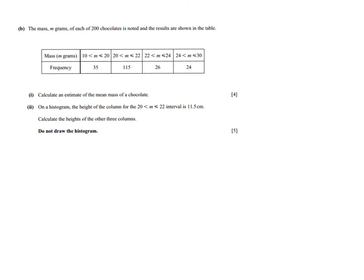Before looking at the questions, let's have a look at the table. So the mass and the frequency: between 10 grams and 20 grams were 35 chocolates, between 20 and 22 grams, 115, between 22 and 24, 26 chocolates, and between 24 and 30 grams, 24 chocolates. Now what is important to realize is that the width of the classes is different. This is from 10 to 20, and this is only from 20 to 22. So the width is different.